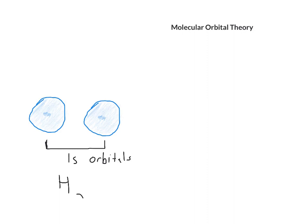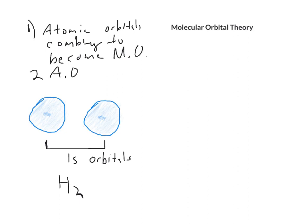The simplest molecule is hydrogen gas H2. So the tenets for MO theory: the first one is that you have atomic orbitals combining to become molecular orbitals. However many atomic orbitals you have, that's how many molecular orbitals you will have. For this example, you have two atomic orbitals, they will combine to make two molecular orbitals.